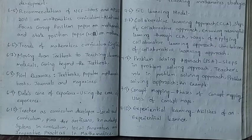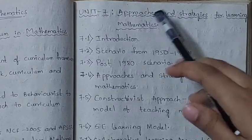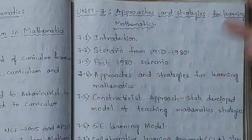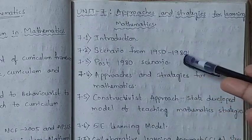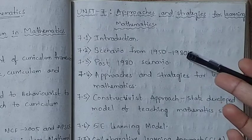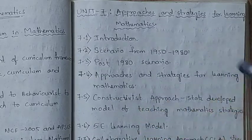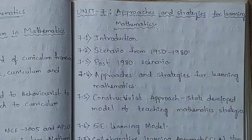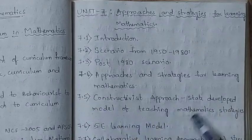Once we have an idea about curriculum and syllabus, we need to know the approaches and strategies to implement them — that is unit 7: Approaches and Strategies for Learning Mathematics. First, 7.1 introduces approaches and strategies, then 7.2 is the scenario from 1950 to 1980 — what it was like initially — and 7.3 is post-1980, how things changed. In 7.4 we look at the main headings of approaches and strategies for learning mathematics.